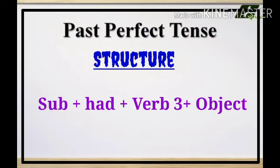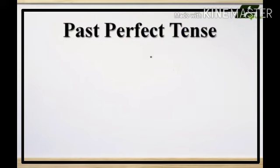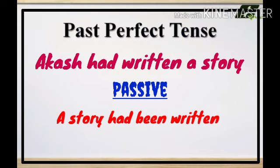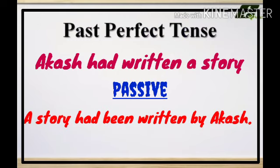Whether the subject is singular or plural, we always use the helping verb 'had.' Example: 'Akash had written a story.' When we change to passive, exchange subject and object: 'A story had been written by Akash.' Just as in present perfect 'has written' changes to 'has been written' and 'have written' to 'have been written,' similarly 'had written' changes to 'had been written.'